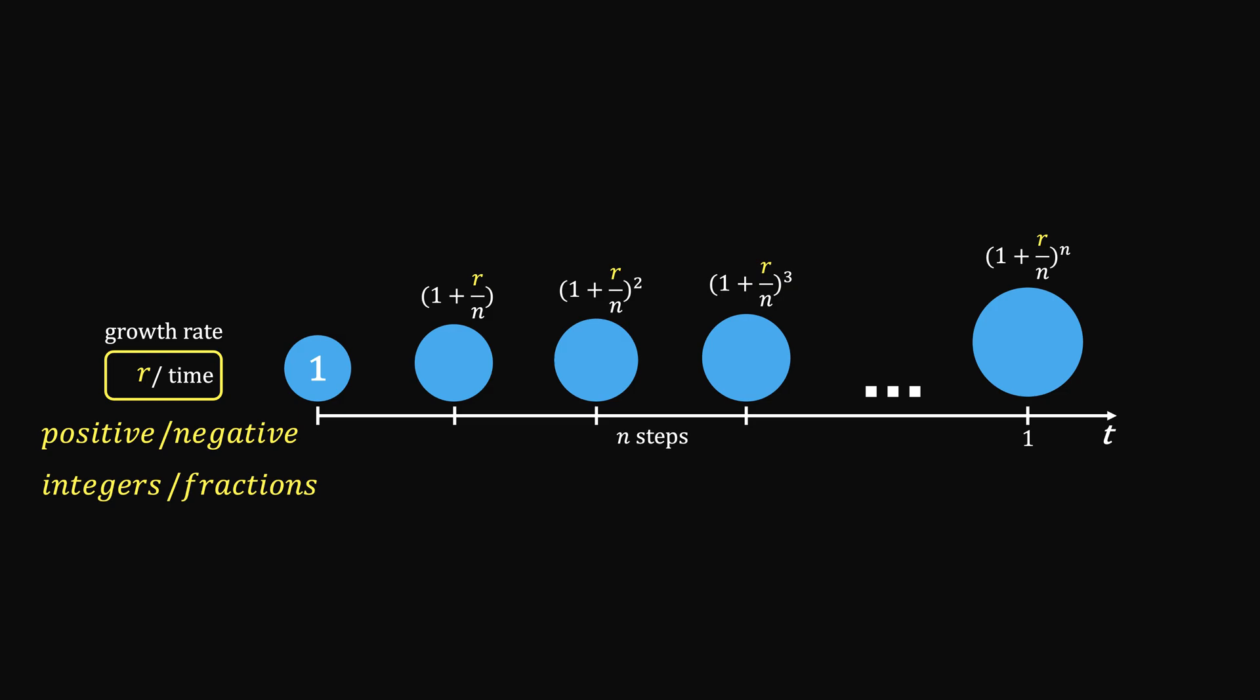We're going to see that this result can be represented in a very convenient form, as e to the power of r. So basically, e becomes the language to express natural change.